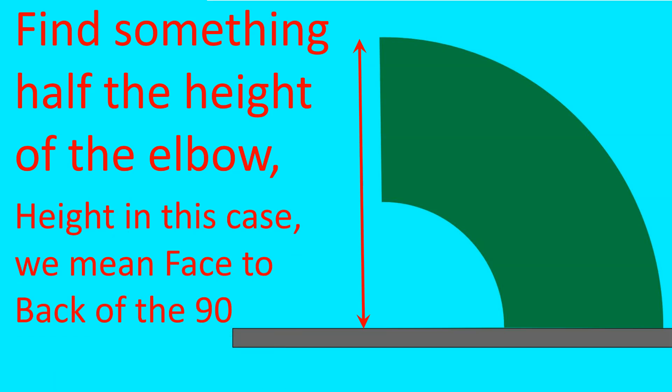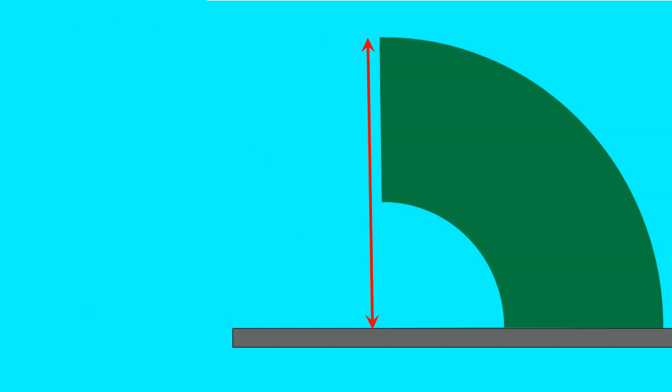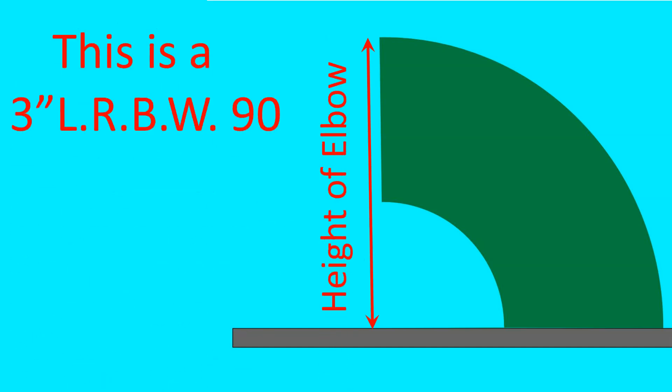So in this case we mean from the face of the 90 to the back of the 90. This is a 3 inch long radius butt weld 90, so what would it be?